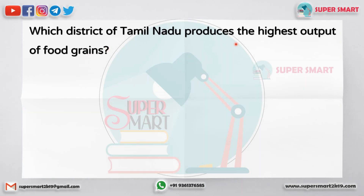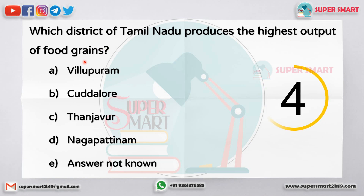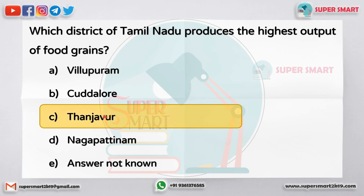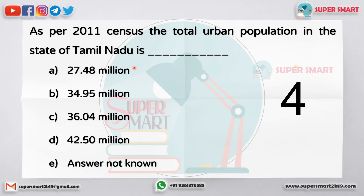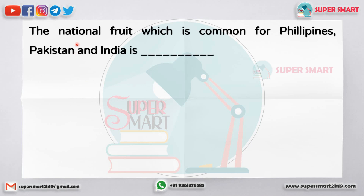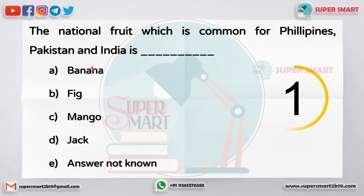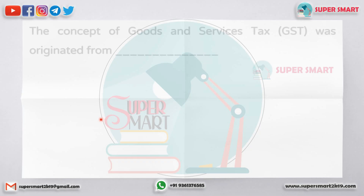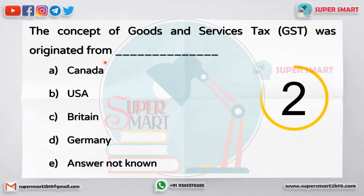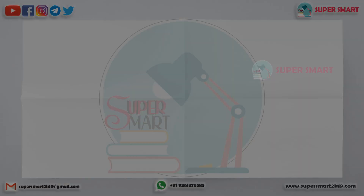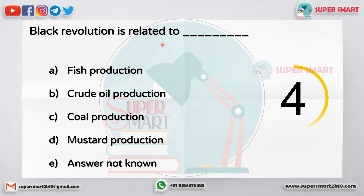Which district of Tamil Nadu produces the highest output of food grains? As per the 2011 census, the total urban population in the state of Tamil Nadu is 34.95 million. The national fruit common for Philippines, Pakistan and India is mango. The concept of GST was originated from Canada. Black revolution is related to crude oil production.